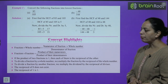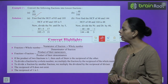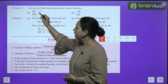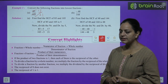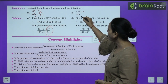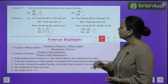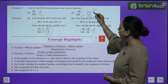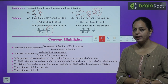Example 3: Convert the following fractions to lowest terms. (A) 85/105 — divide both by 5 → 17/21. Cannot be reduced further, so answer is 17/21. (B) 48/144 — divide by 2 → 24/72; divide by 2 → 12/36; divide by 12 → answer is 1/3.